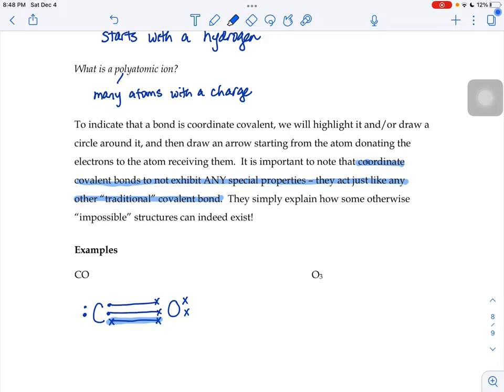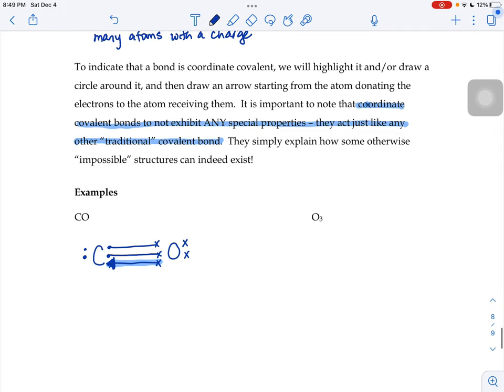The top 2 bonds in that structure had 1 element donating 1 electron, but the bottom bond here, both of these guys came from the oxygen. So I'm going to point to the mooch and turn this into an arrow. Carbon, you didn't contribute to that bond at all. So here's what the final drawing would look like: a triple bond in the middle, lone pairs on either side, and that bottom bond only is a coordinate covalent bond.